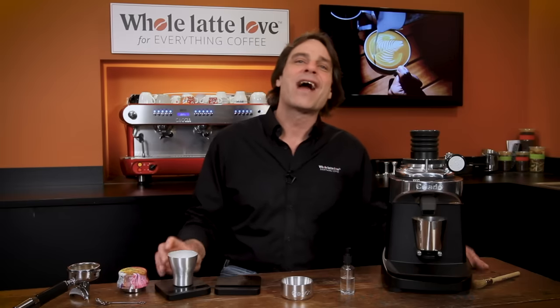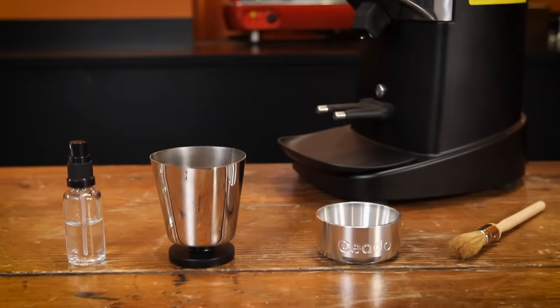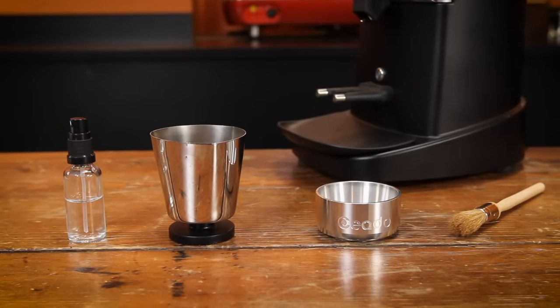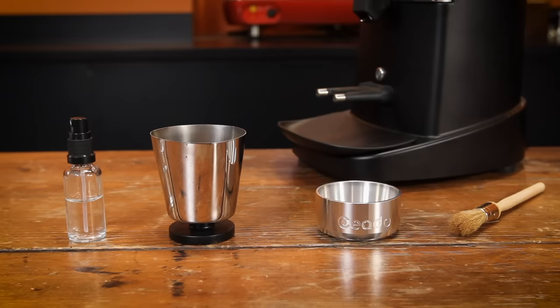So let's go over how to use the E37 SD. Here are the extra tools it comes with to get the job done. There's an RDT sprayer, a WDT cup and an espresso funnel and a brush.